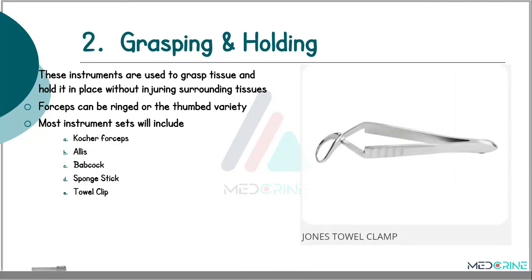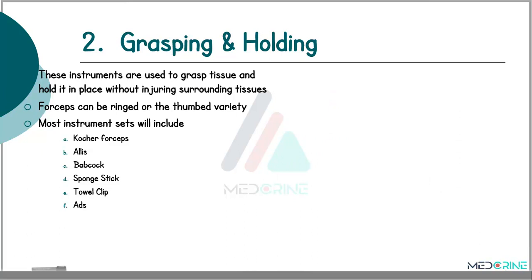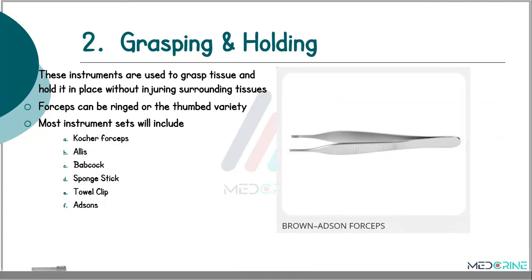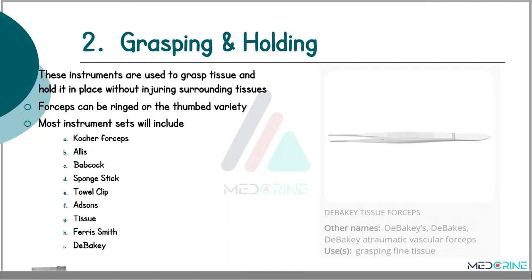We have towel clips: the Backhaus towel clip, Johns towel clip, Edna towel clip and Doyen cross-action towel clamp, and a Roth towel clamp. We also have Adson's forceps, Adson's tissue forceps, Brown-Adson forceps, disposable dissecting forceps, Singley tissue forceps, Ferris-Smith forceps and DeBakey tissue forceps.